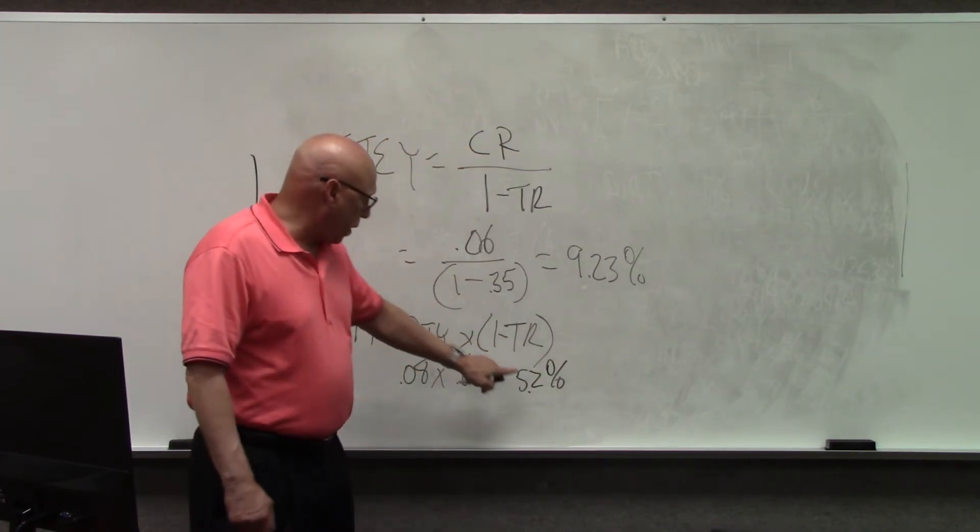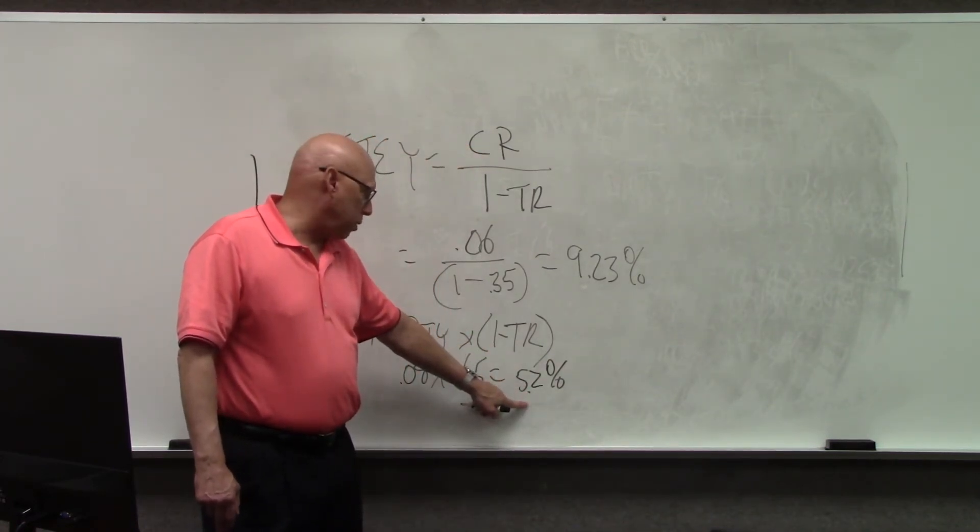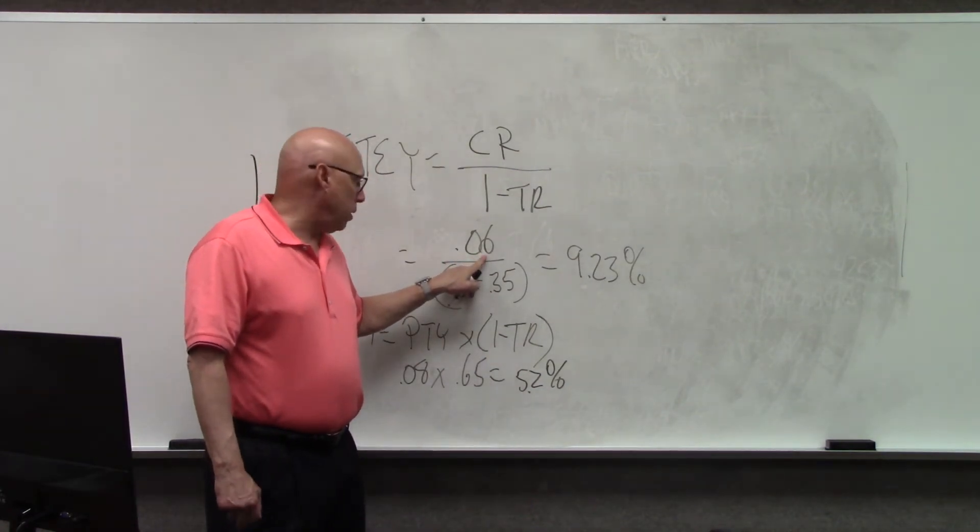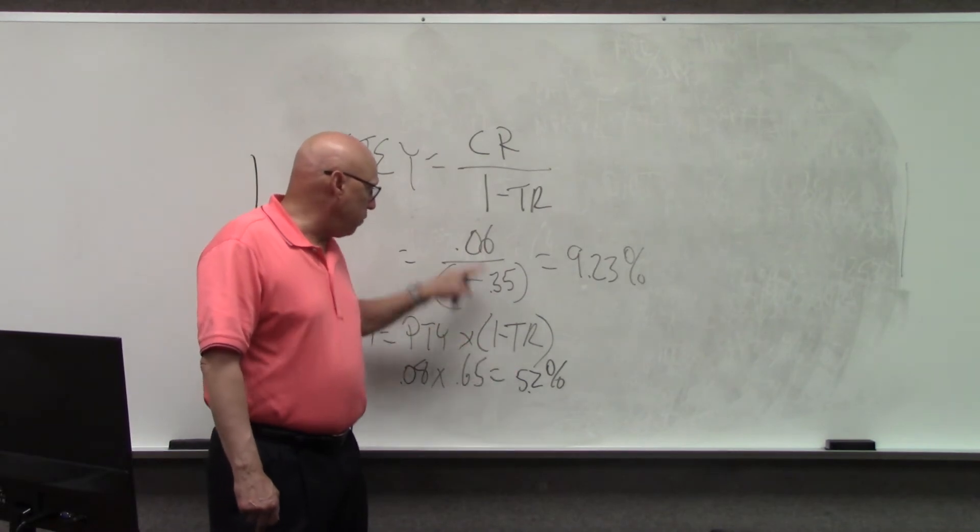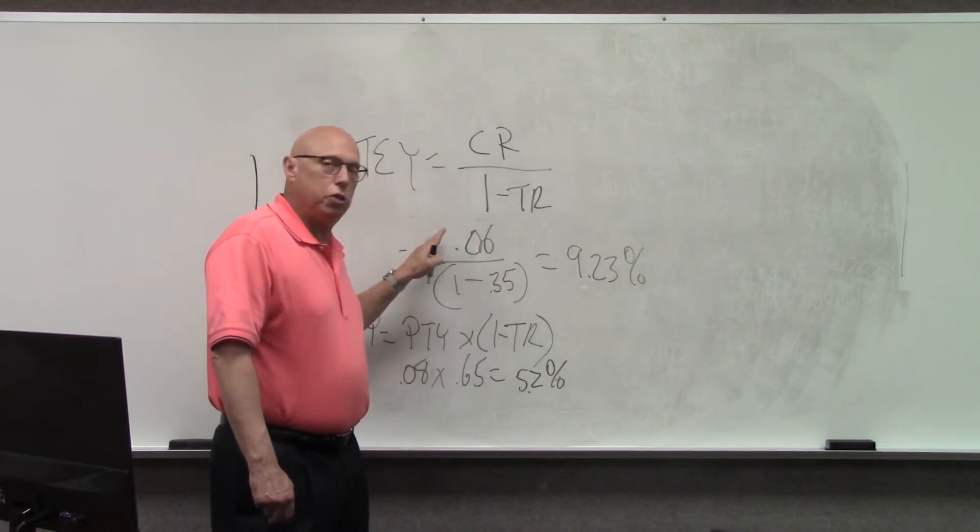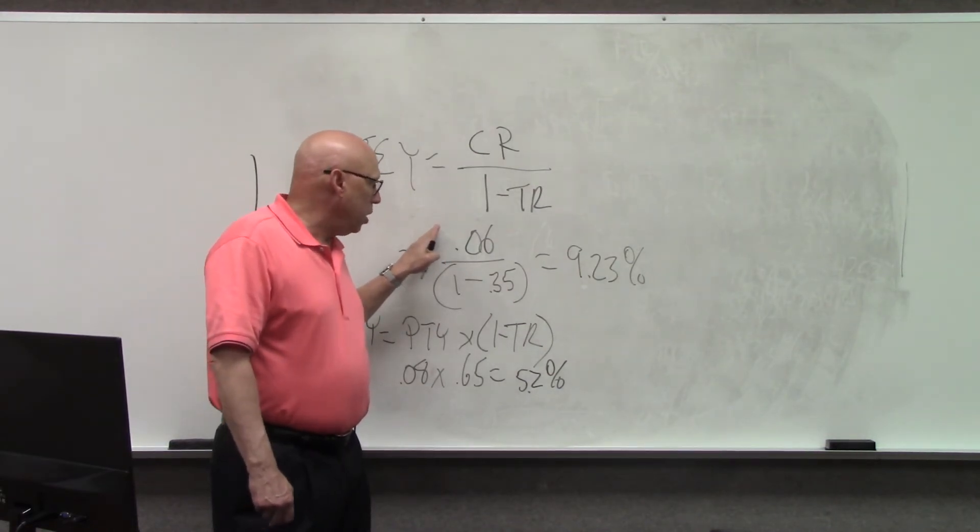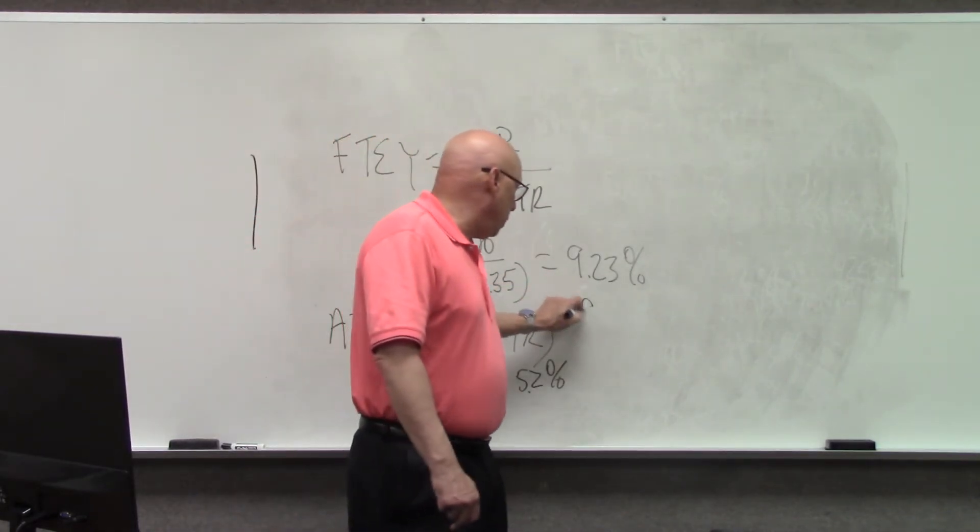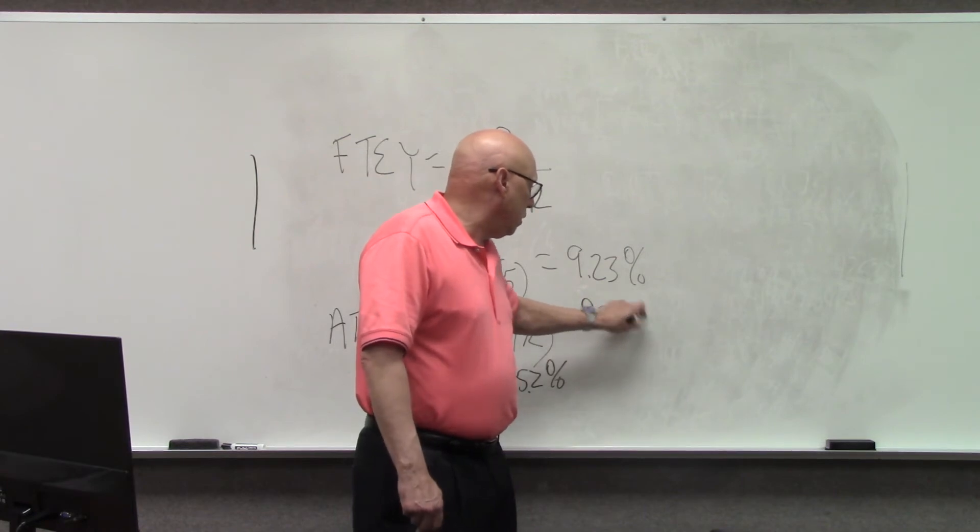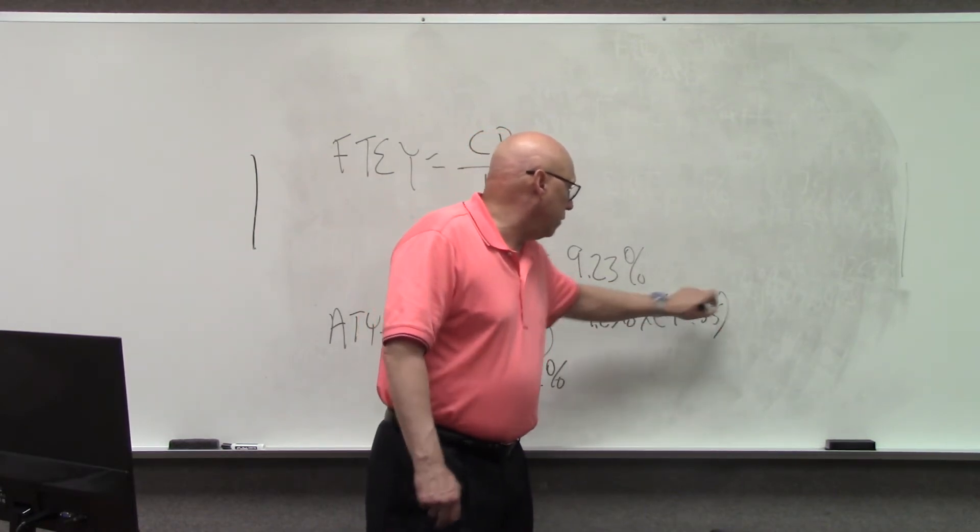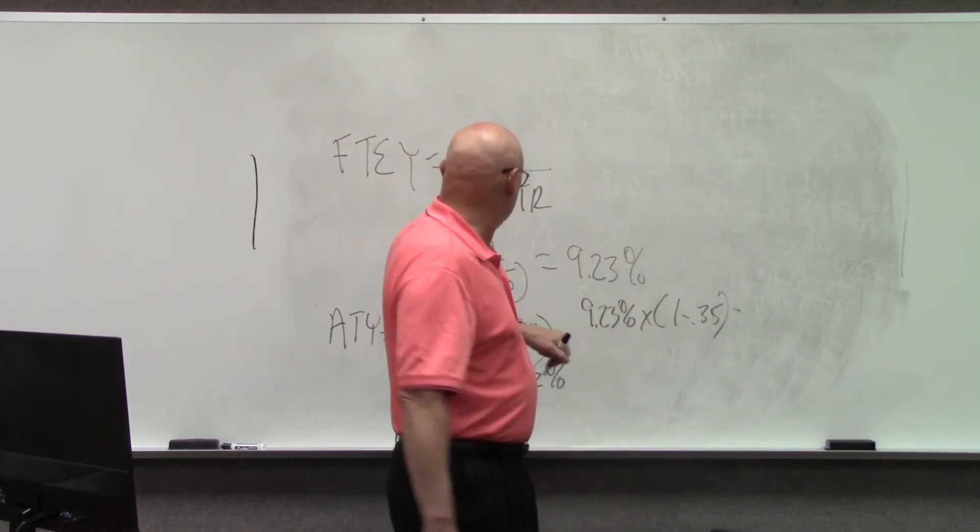Now, you could compare the after-tax rate on a corporate bond with the before-tax rate on a municipal bond. That is a fair comparison. After-tax taxable bond, pre-tax municipal bond, because there is no tax. So, what would be the after-tax yield on this? It would be 9.23% times 1 minus 0.35. Guess what? That would be 6%.